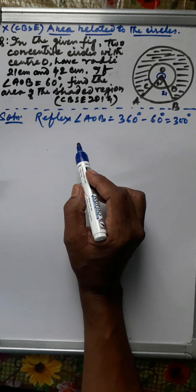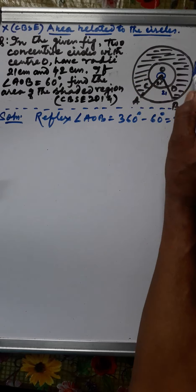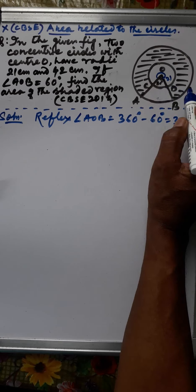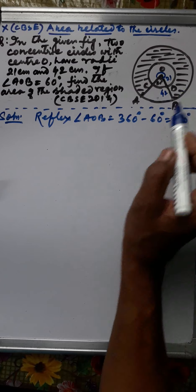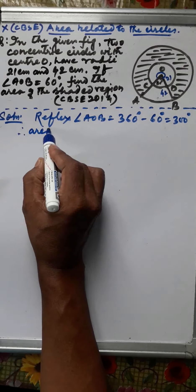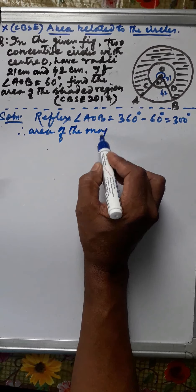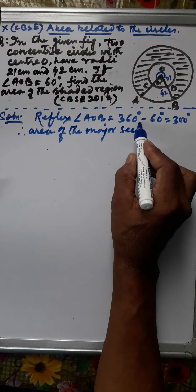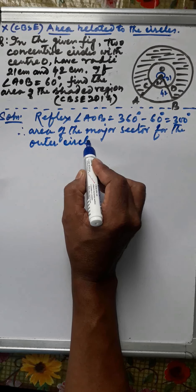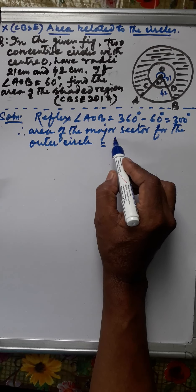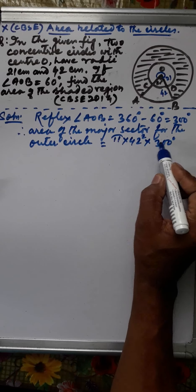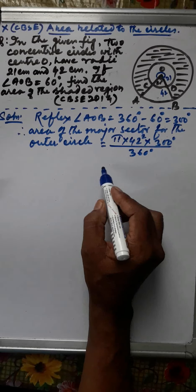Now we can find the area of the major sector for the outer circle. The radius of the bigger circle is given as 42 centimeters. The area of the major sector for the outer circle is equal to pi r squared, where r is 42, multiplied by theta over 360, where theta is 300 degrees.